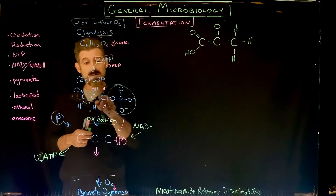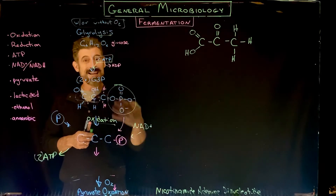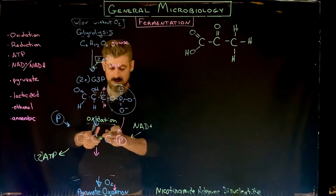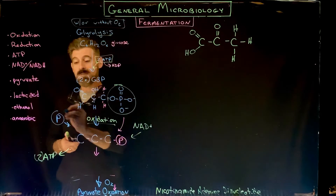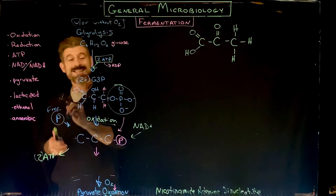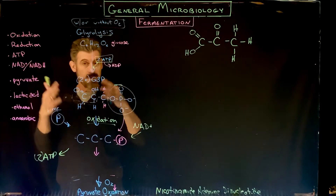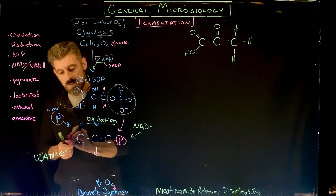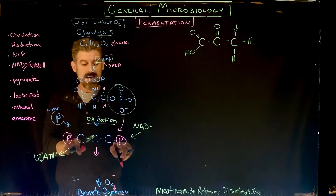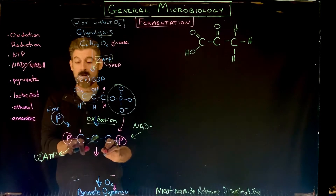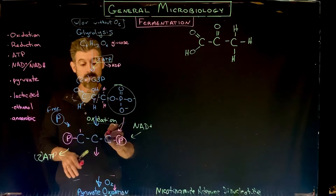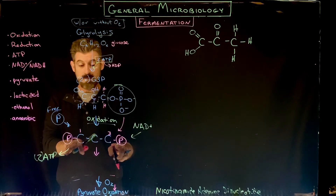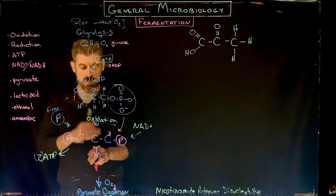NAD is going to come in and there's going to be an oxidation event, which means a removal of electrons. This molecule is going to have electrons removed from it, and that process is going to give off enough energy to allow a free phosphate - not attached to an ATP, just on its own - to be attached to the other side of this three-carbon molecule. Now it's a three-carbon molecule with a phosphate on carbon one and a phosphate on carbon three: diphosphoglycerate - two phosphates on the three-carbon molecule.